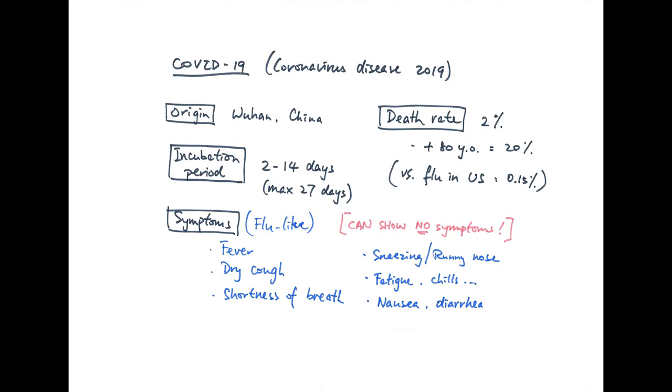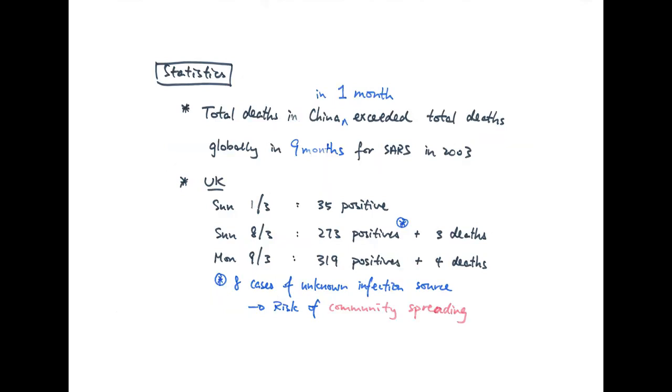On that note, let's look at some statistics. When the virus started spreading initially, it killed many people in China. The total number of deaths in China during that first month exceeded the total number of deaths caused by SARS globally in nine months, which was in 2003. In other words, COVID-19 killed more people in one month in one single country compared to SARS globally in nine months.